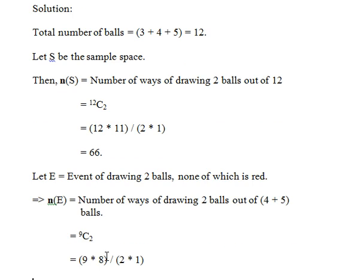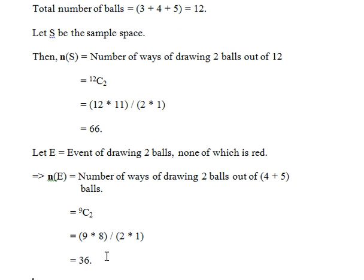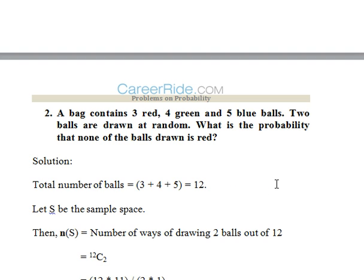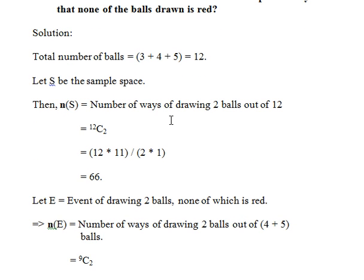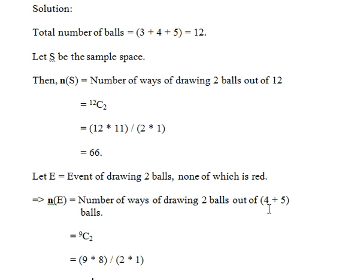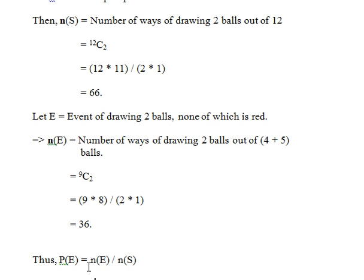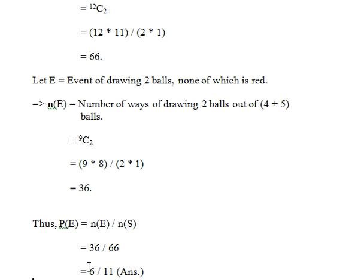Now the events. Let E equal event of drawing 2 balls none of which is red. So the number of ways of drawing 2 balls out of 4 and 5 - we are leaving behind 3 because there are 3 red balls and they said that no ball should be drawn which is red. So we will leave behind 3 and we will only count 4 and 5. So the number of ways of drawing 2 balls out of the green and blue balls, 4 and 5, would be 9C2. Similarly we will calculate and we will get n(E) = 36. Now the probability would be n(E) upon n(S), that would be 36 upon 66, and we get the answer as 6 upon 11.